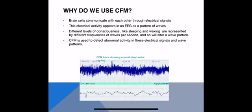So why do we use CFM? Brain cells communicate with each other using electrical signals, and these signals are picked up by the EEG and recorded as wave patterns on the screen. There are different levels of consciousness represented by different frequencies — waves per second — and this alters the wave pattern that we see.